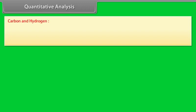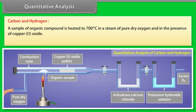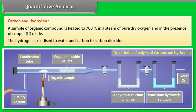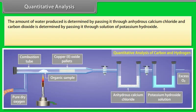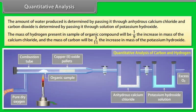Quantitative Analysis — Carbon and Hydrogen: A sample of organic compound is heated to 700°C in a stream of pure dry oxygen in the presence of copper(II) oxide. Hydrogen is oxidized to water and carbon to carbon dioxide. The amount of water produced is determined by passing it through anhydrous calcium chloride, and carbon dioxide is determined by passing it through potassium hydroxide solution. The mass of hydrogen present is 1/9 of the increase in mass of the calcium chloride, and the mass of carbon is 3/11 of the increase in mass of the potassium hydroxide.